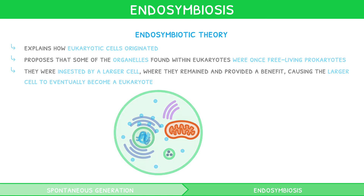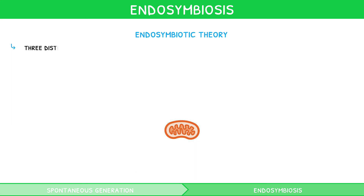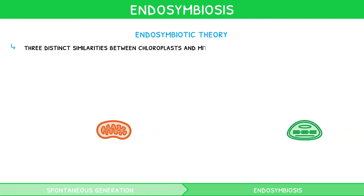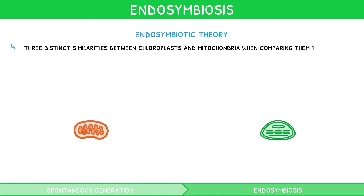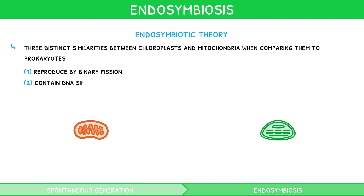The evidence for this theory comes from three distinct similarities between chloroplasts and mitochondria when comparing them to prokaryotes. Chloroplasts and mitochondria reproduce by binary fission, just like prokaryotes. Chloroplasts and mitochondria contain DNA similar to prokaryotes. And finally, chloroplasts and mitochondria have their own 70S ribosomes, just like prokaryotes.